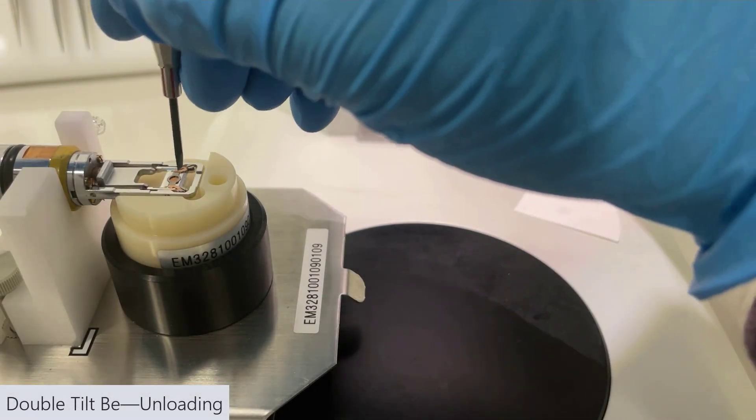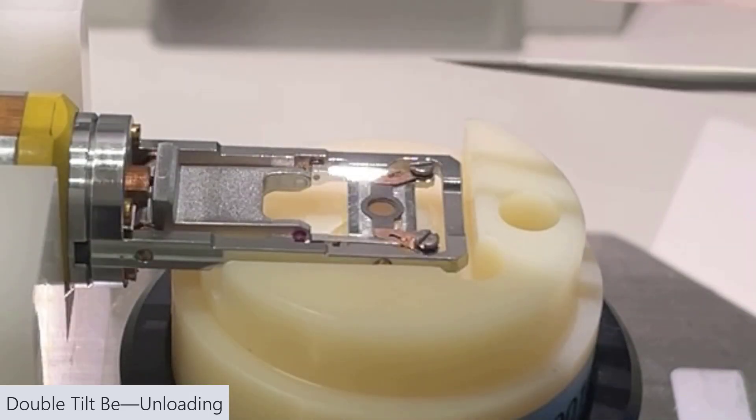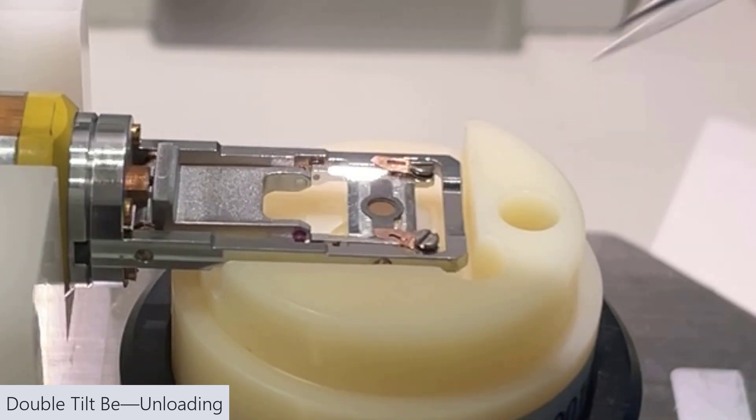Now, for unloading, same deal in reverse. Loosen our screws a couple of turns. Move the metal pieces out of the way.